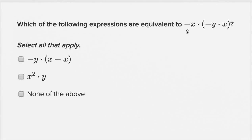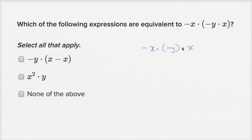Which of the following expressions are equivalent to negative x times, in parentheses, negative y times x? Select all that apply. Let's manipulate this a little bit. Multiplication is associative, so it's negative x times negative y times x. The way it's written, I could do the first two first — or I could do the last two first. What I find interesting is a negative times a negative is going to be a positive.